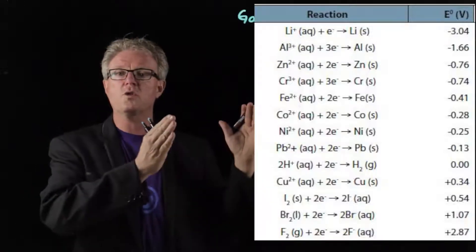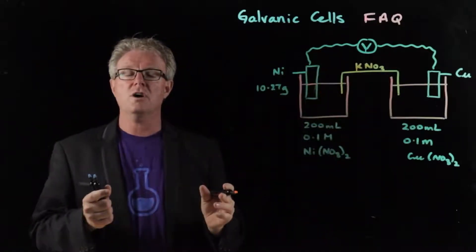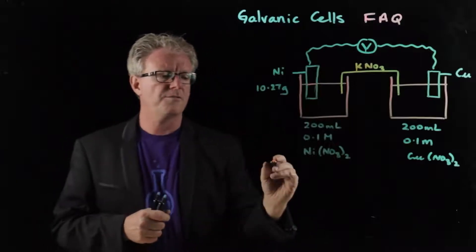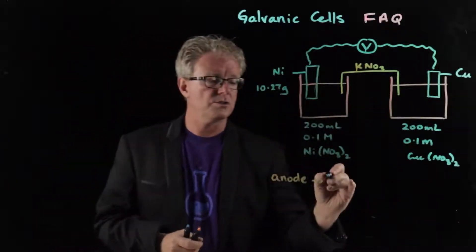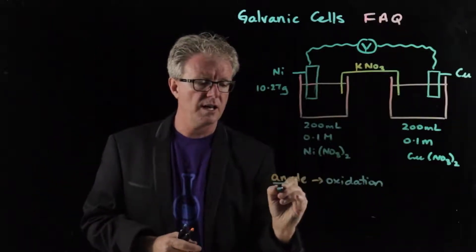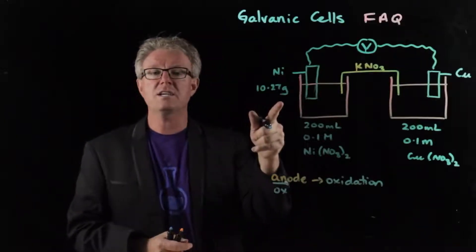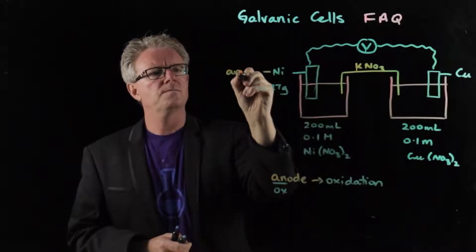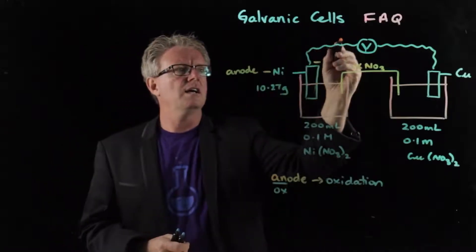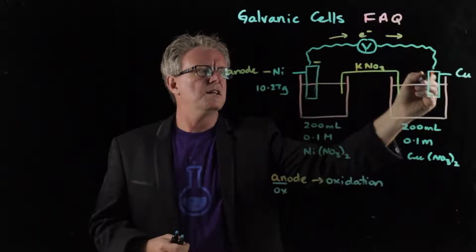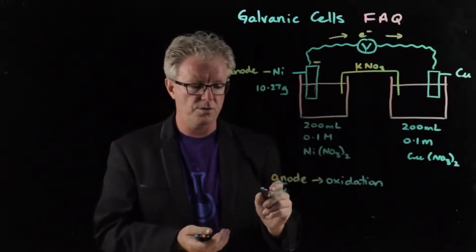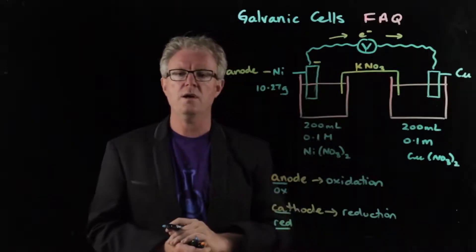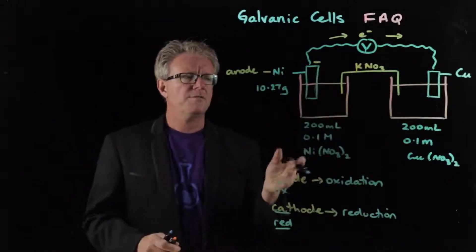I always try to draw it the same way: the one being oxidized is on the left-hand side, and the one being reduced is on the right-hand side. Therefore, electron flow is always going in a clockwise fashion. The anode is where oxidation occurs — remember 'anox': AN and OX. So oxidation occurs at the anode, and that's nickel — the anode is negative. Electrons come out of the anode, go clockwise down to the copper, and copper is being reduced, making it the cathode. Remember 'red cat': reduction at the cathode.